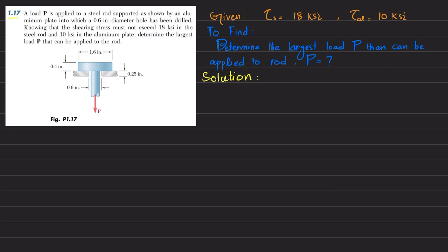A load P is applied to a steel rod supported as shown by an aluminum plate into which a 0.6 inch diameter hole has been drilled. Knowing that the shearing stress must not exceed 18 ksi in the steel rod and 10 ksi in the aluminum plate, determine the largest load P that can be applied to the rod.